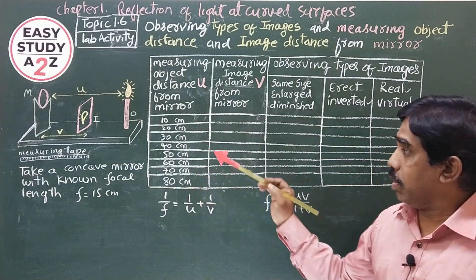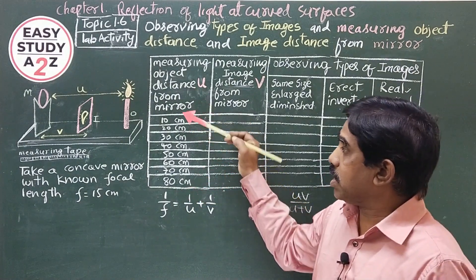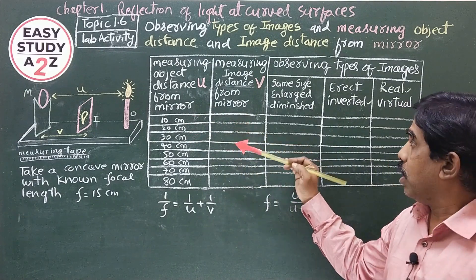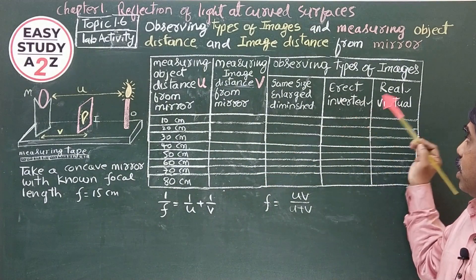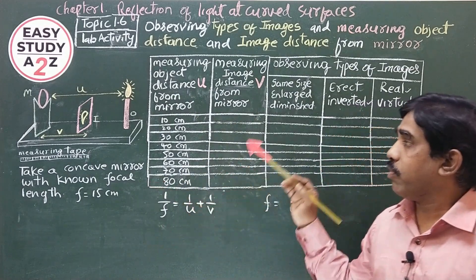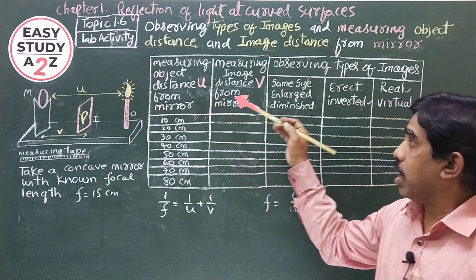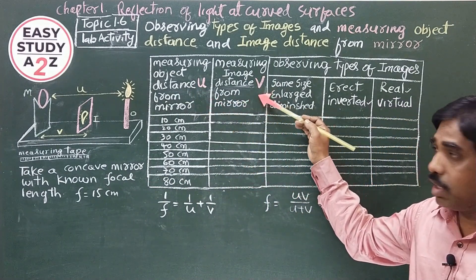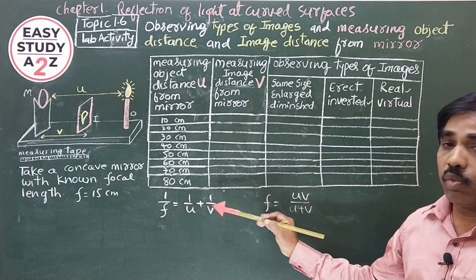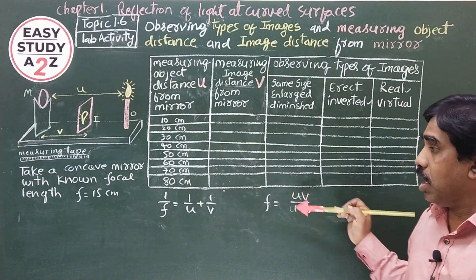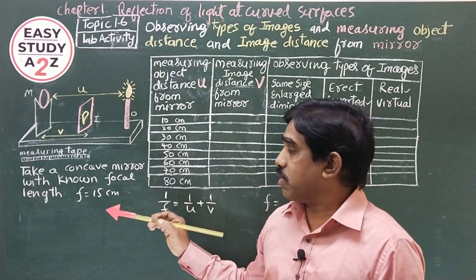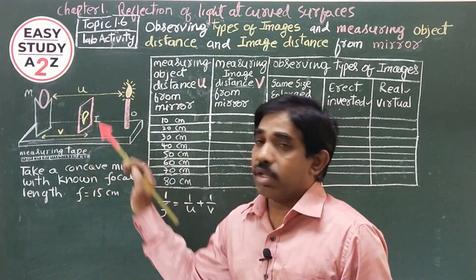In most cases with a concave mirror, we get a real and inverted image. After finding the object distance U and image distance V, we can also calculate the focal length of the concave mirror and verify whether it matches the known focal length marked on the mirror.